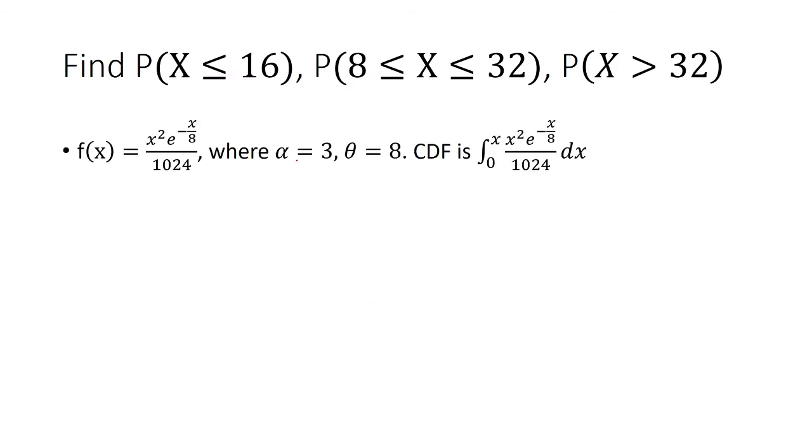Okay, so recall we said that alpha was 3, theta was 8. So we're going to make the substitution. On the bottom here, it was previously alpha minus 1 times theta to the alpha power, or rather, it was gamma 3 times 8 cubed. This was the denominator, and then gamma 3 is 2 factorial.